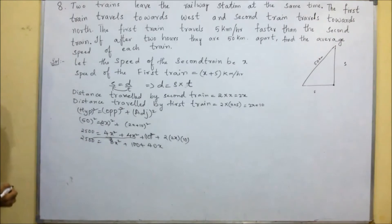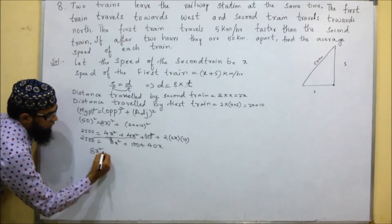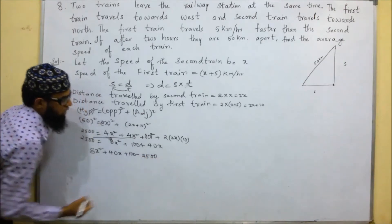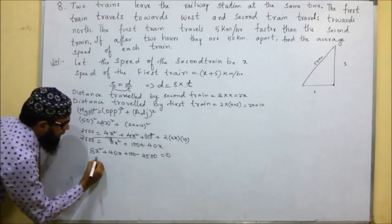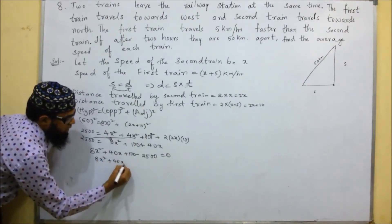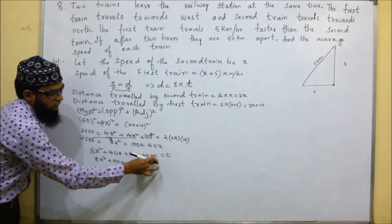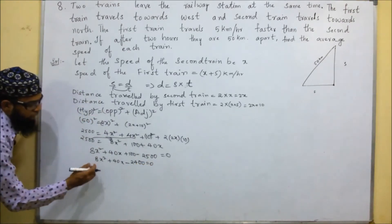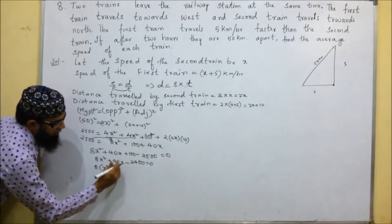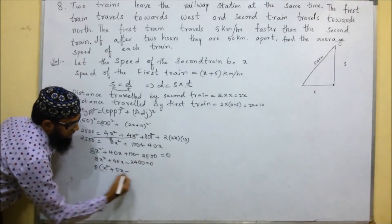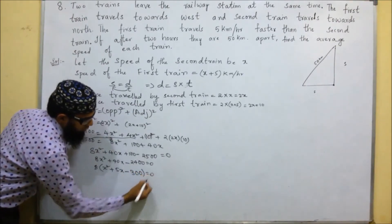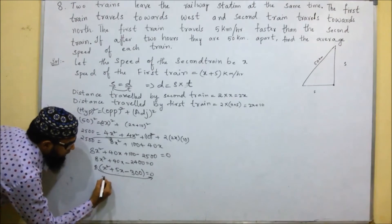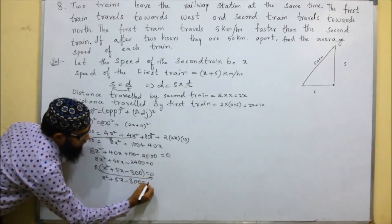Moving 2500 to the other side: 8x² plus 40x plus 100 minus 2500 equals 0, which gives 8x² plus 40x minus 2400 equals 0. Dividing through by 8, we get x² plus 5x minus 300 equals 0.